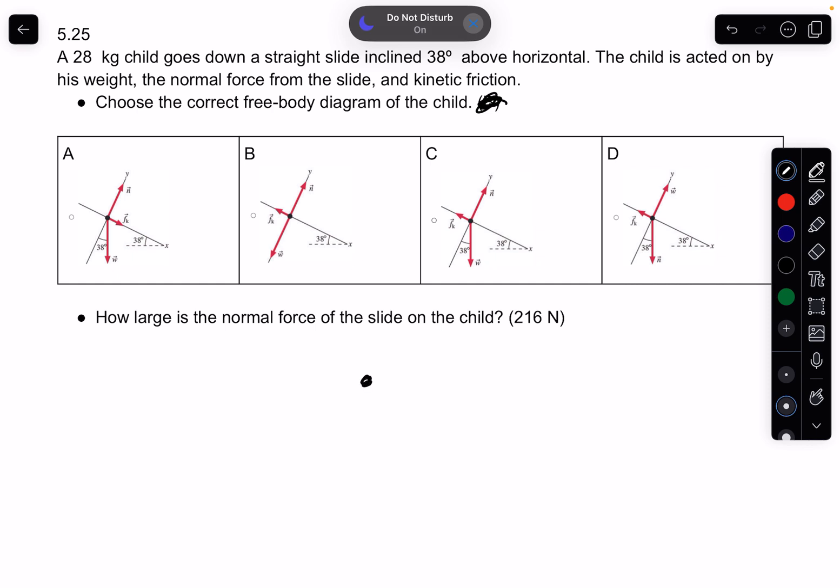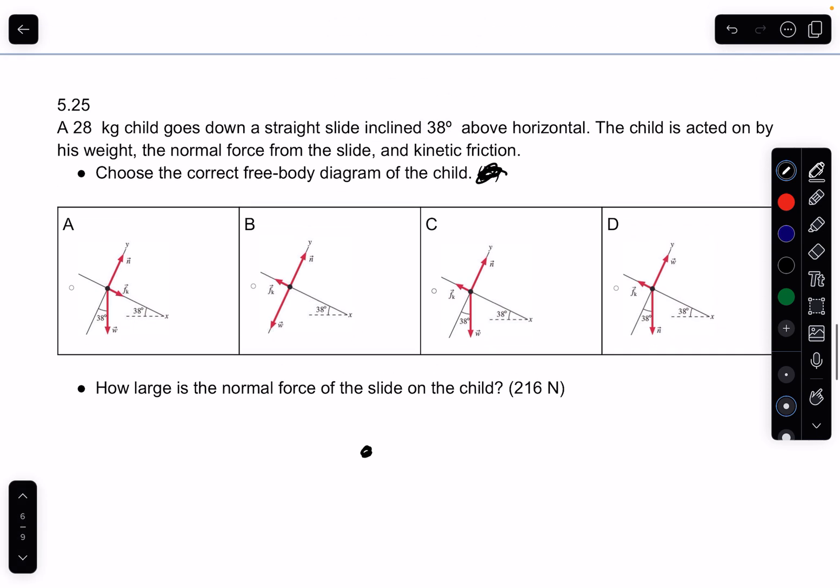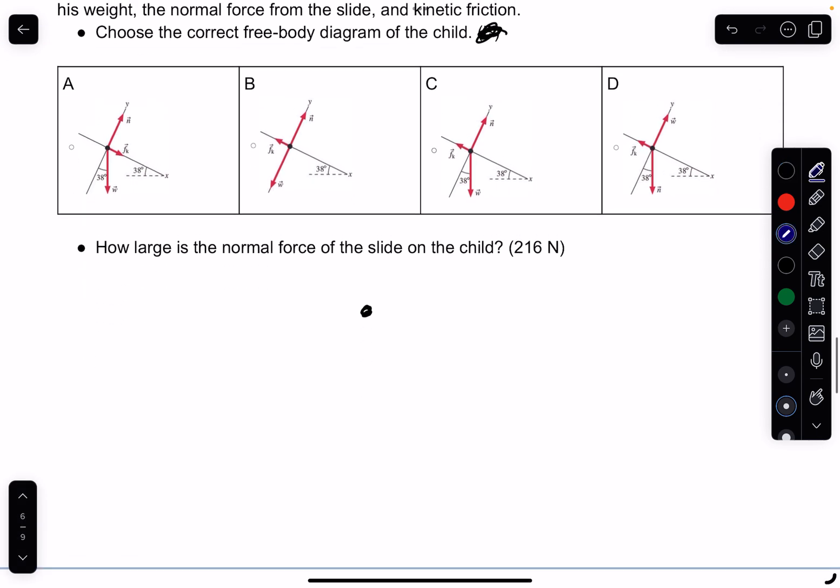So here we go. We've got a child sliding down a ramp, so let's draw the ramp in blue. We know the angle is 38 degrees, and of course you can see that's what everybody has, all these diagrams.